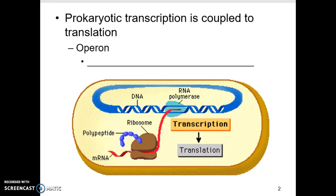An operon is a grouping of functionally related genes. You have an operon for cell shape, an operon for the proteins that act as receptors on your membranes, etc. An operon is this grouping of genes that work together — a team of genes that work together to produce a certain function within the cell. Keep that in mind as we look at transcription and translation.